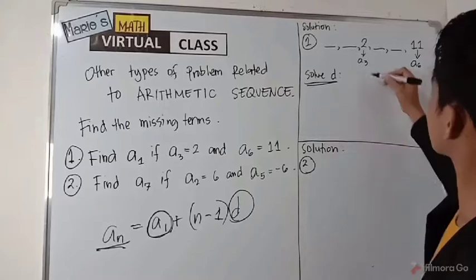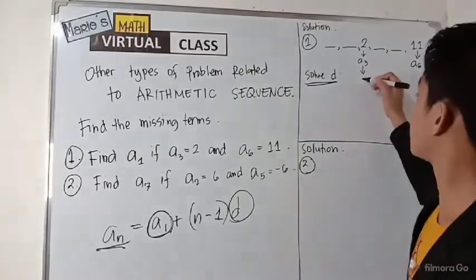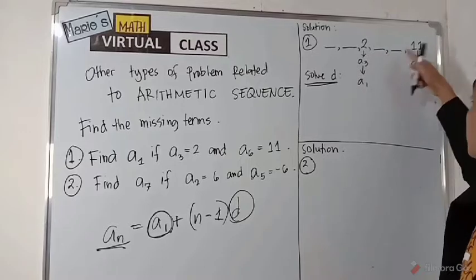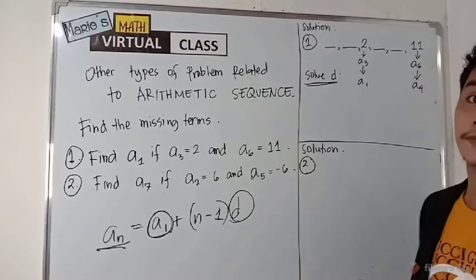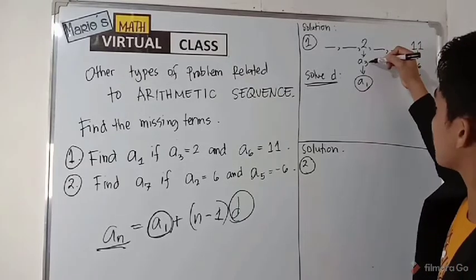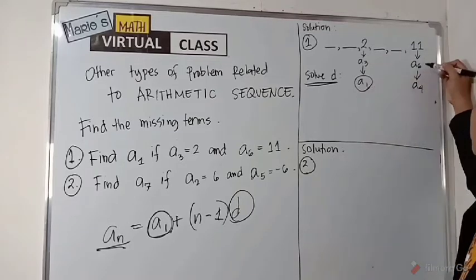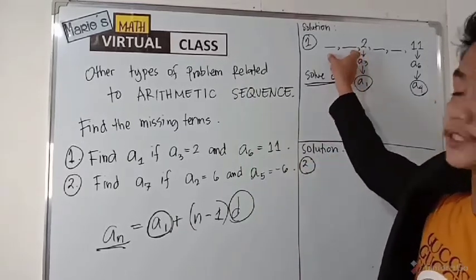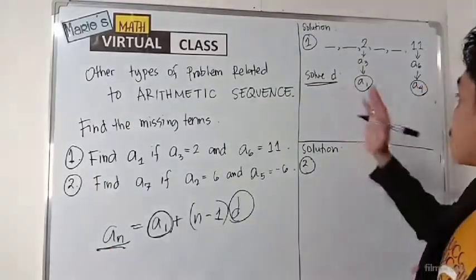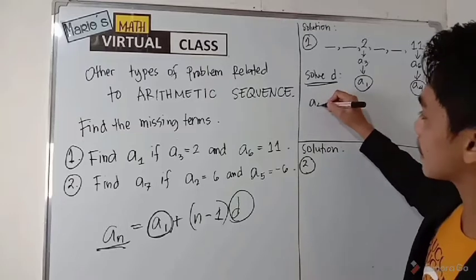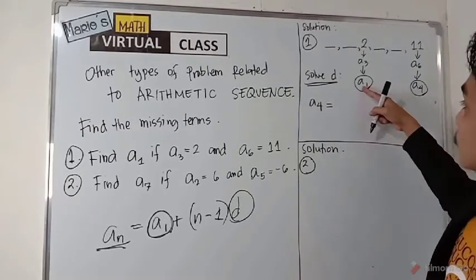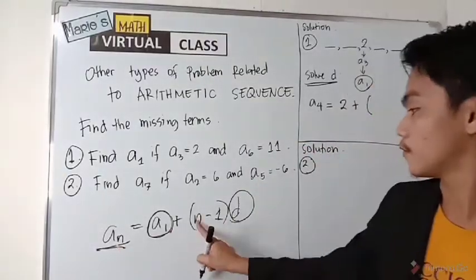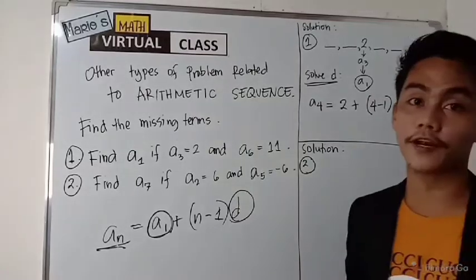To find the common difference, assume that a sub three is your first term. If this is the first term, count: first, second, third, fourth — therefore a sub six becomes your fourth term. So three minus two equals one and six minus two equals four. You have just adjusted both terms by subtracting two. Using the nth term formula: a sub four equals a sub one — which is now two — plus four minus one times the common difference.